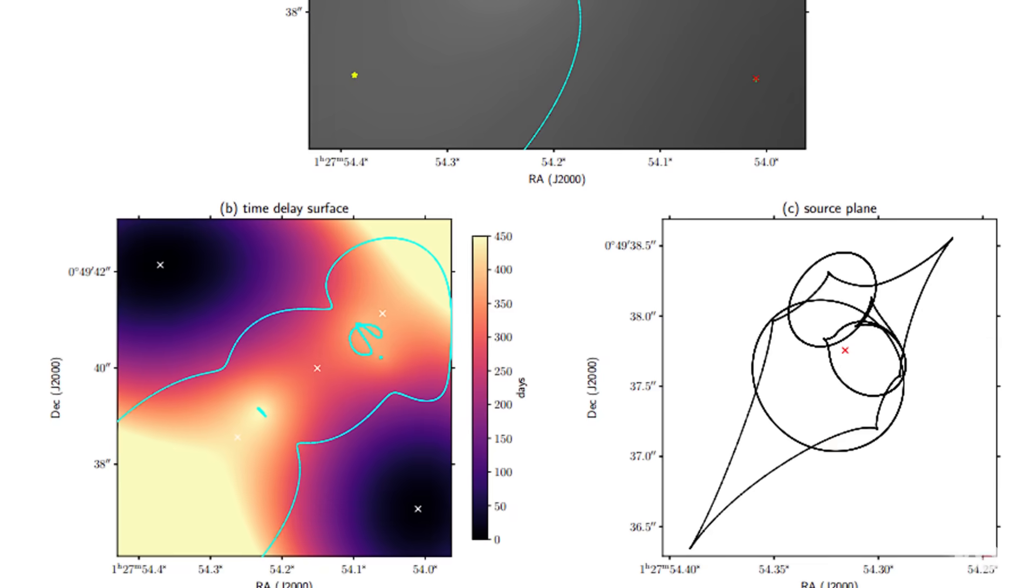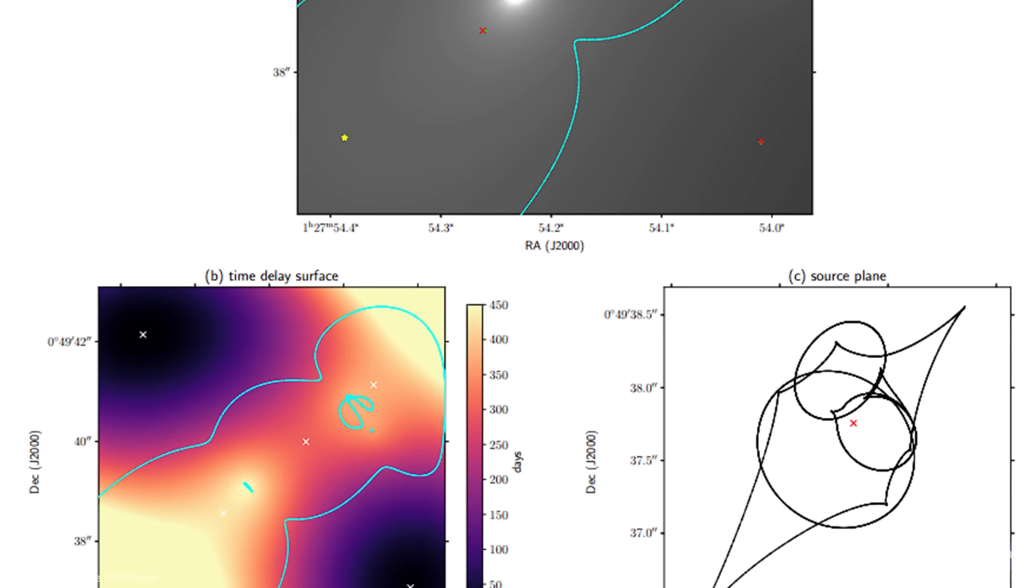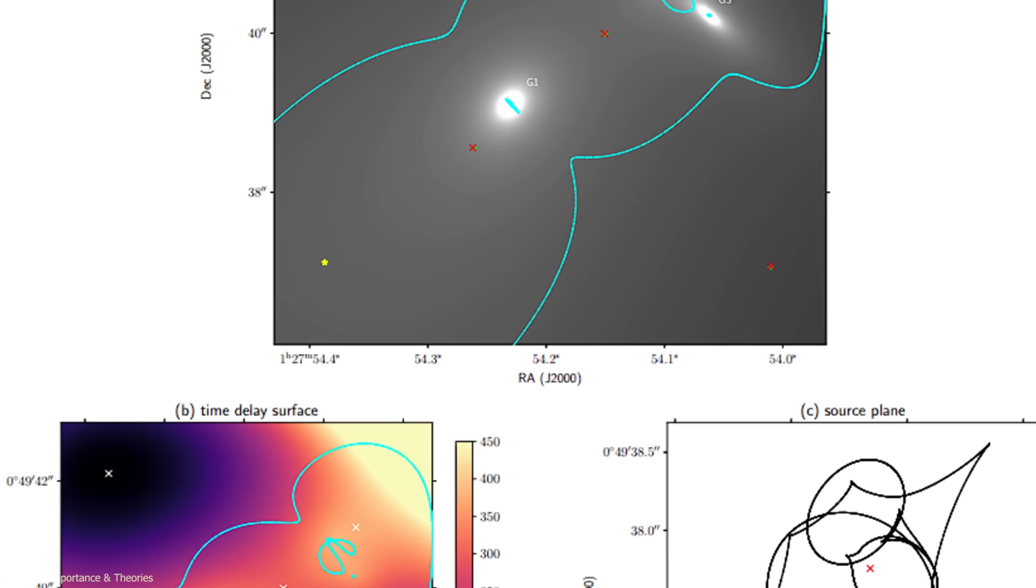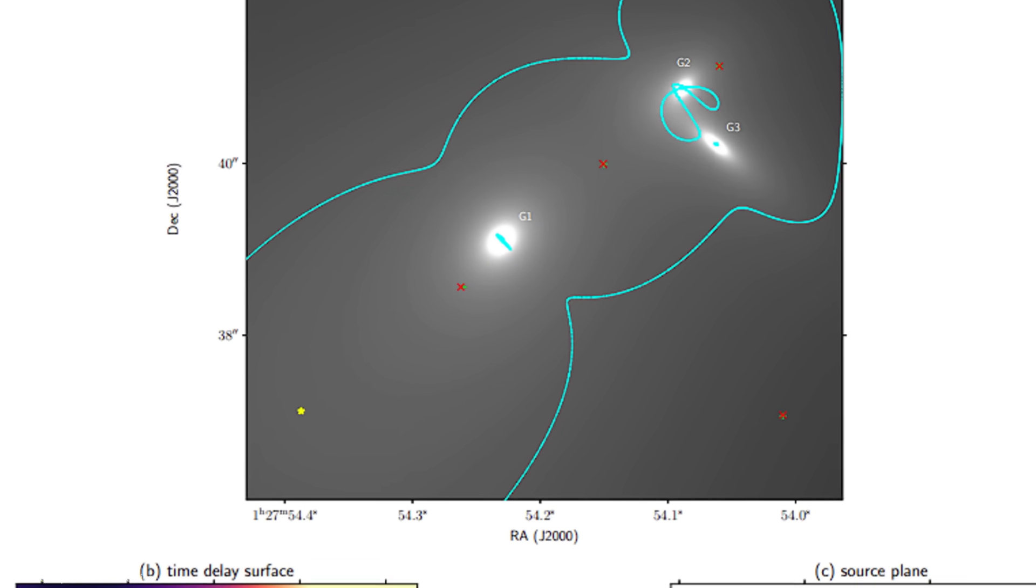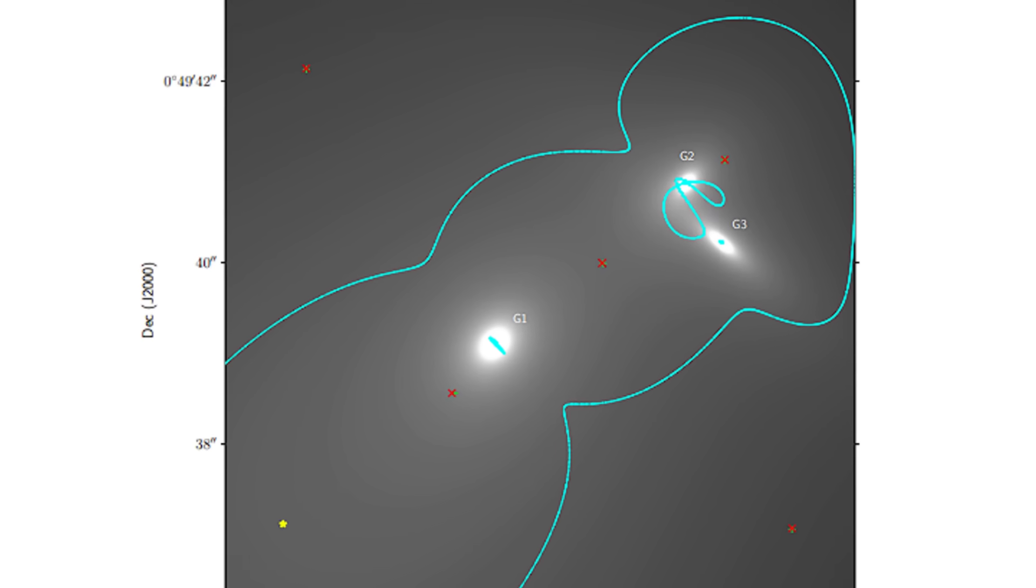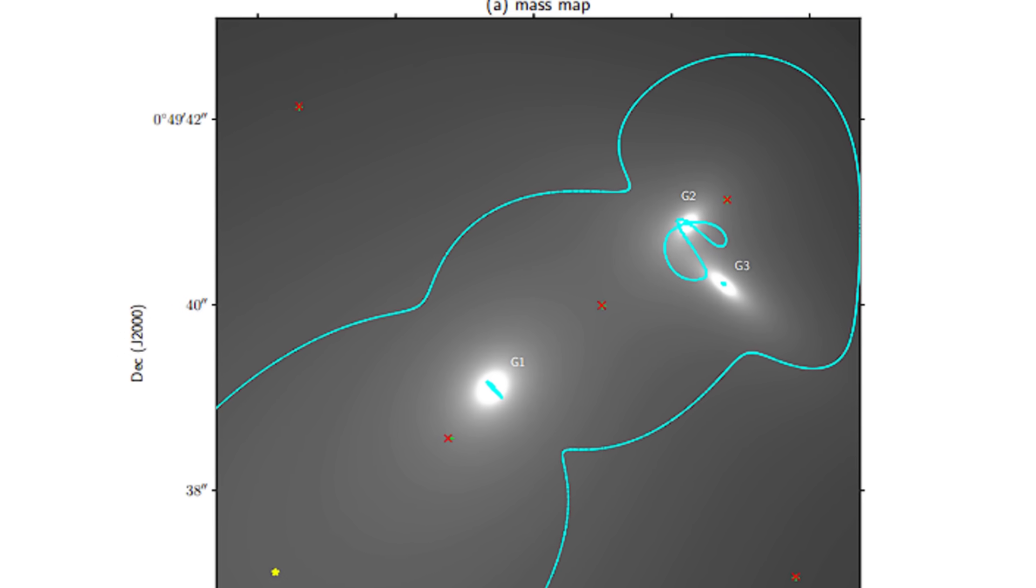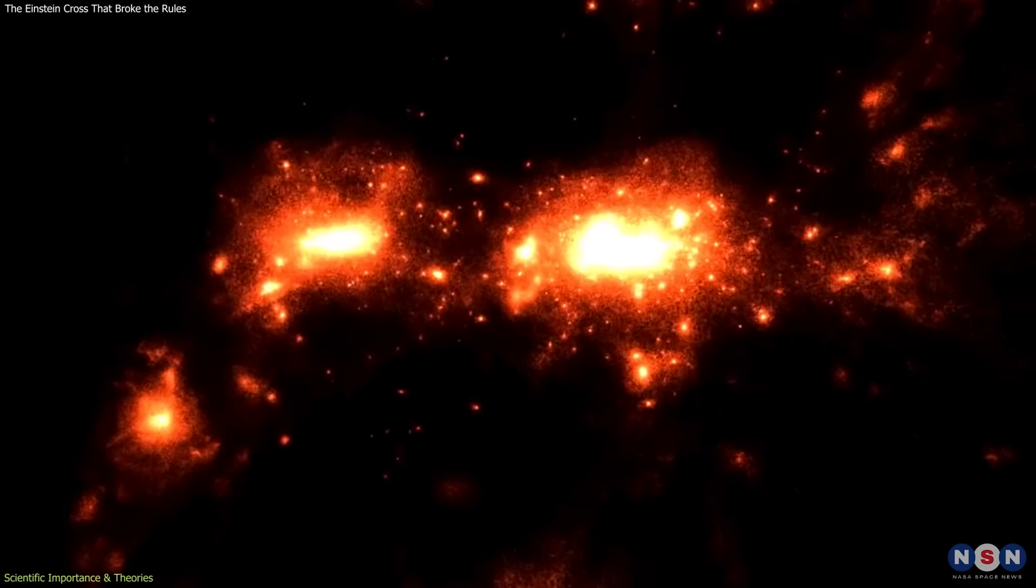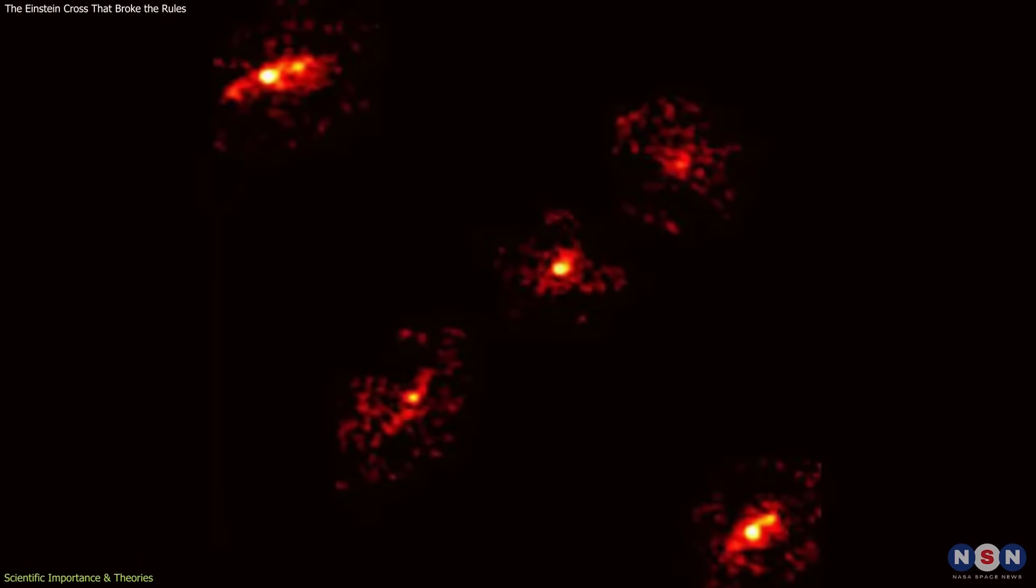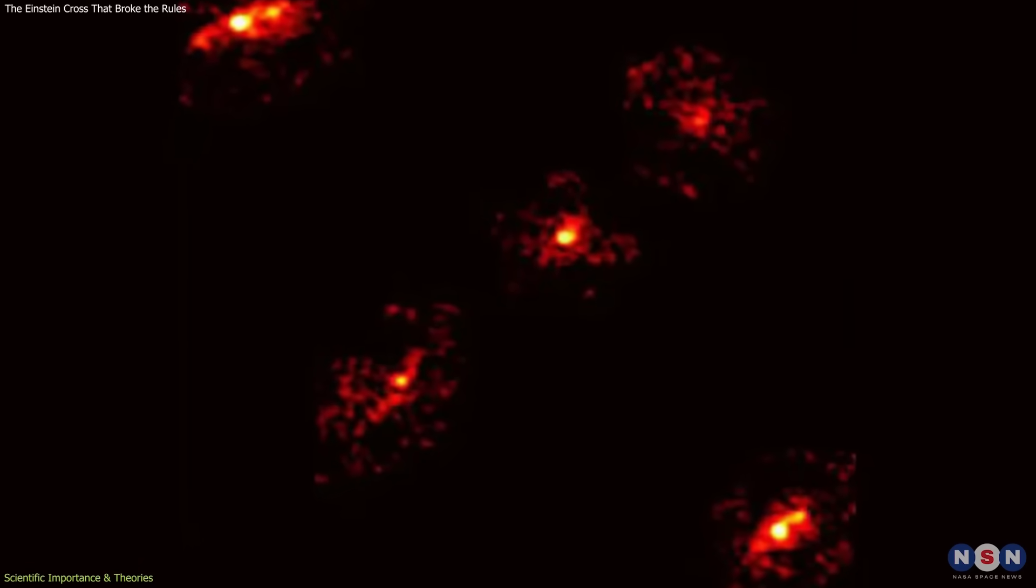To solve the puzzle, researchers built detailed computer models of the lens. They mapped the positions of the four visible galaxies and assigned them masses based on their luminosity. When they ran the simulations, the result was clear: the models could not reproduce the five-image pattern.